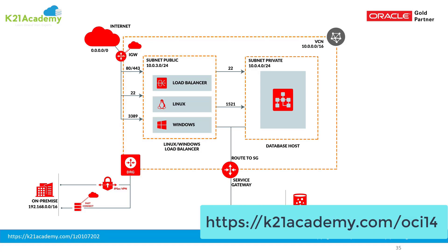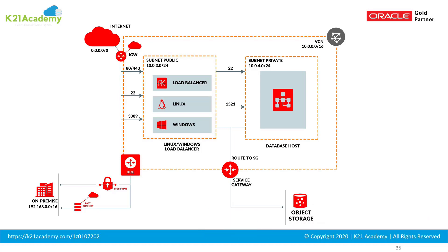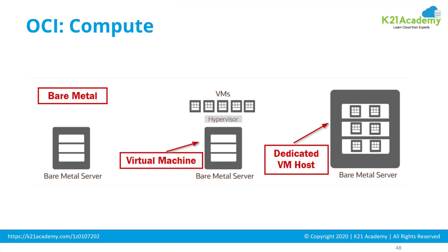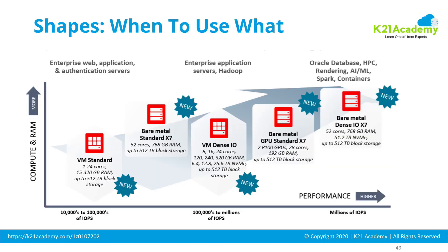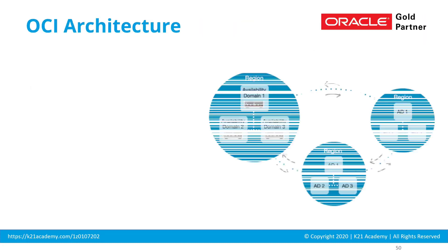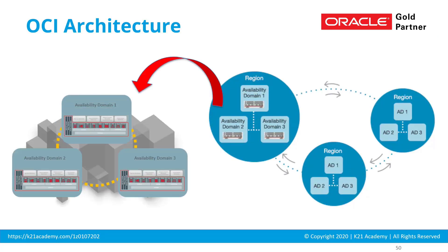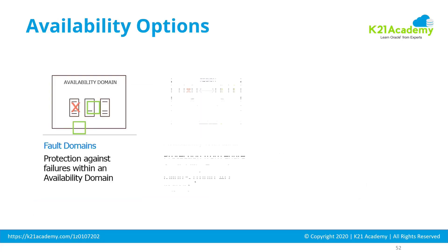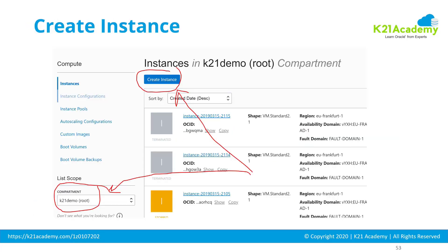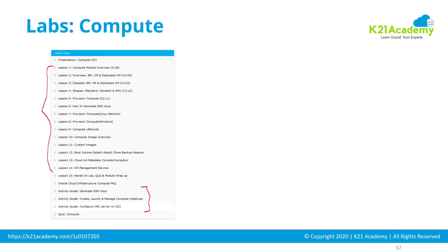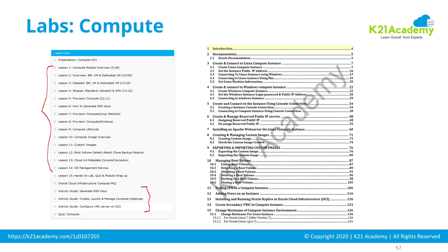In the next episode, part three of the five-part video series, I'm going to talk about compute. We'll look at three different types of compute: bare metal, virtual machines, and dedicated VM host. We'll also look at different types of shapes and when to use each. You should know about OCI architecture — region, availability domain, and fault domain — as well as availability options and tasks like creating instances, image types, boot volumes, console connections, and the hands-on labs you must perform.